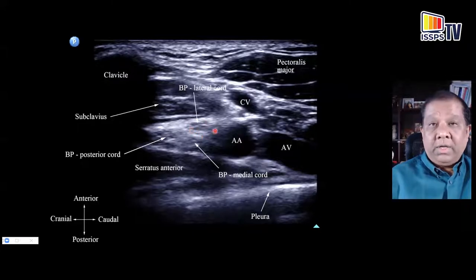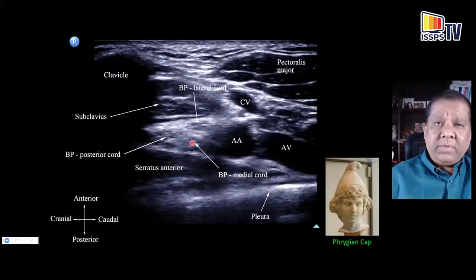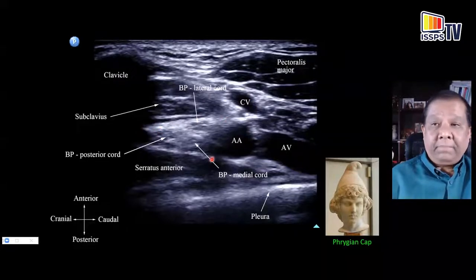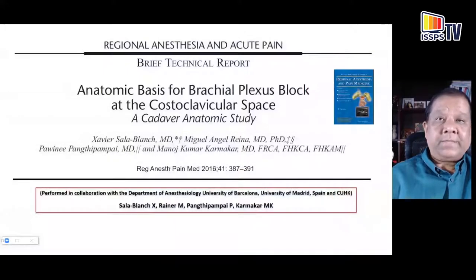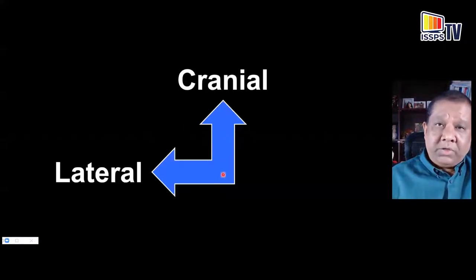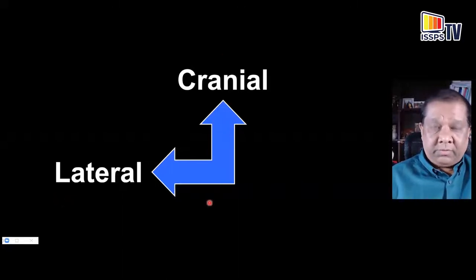The lateral cord is the most superficial, deep to that is the medial cord, and the posterior cord is cranial and lateral to both — an arrangement described as a Phrygian cap. For all subsequent images, whether cadaveric or ultrasonographic, cranial is at the top and lateral is to the left, irrespective of the image orientation.